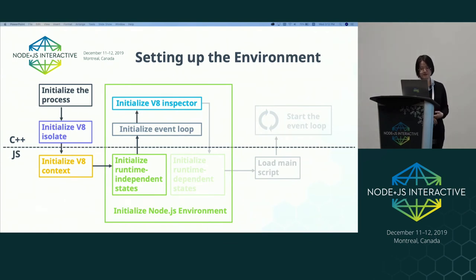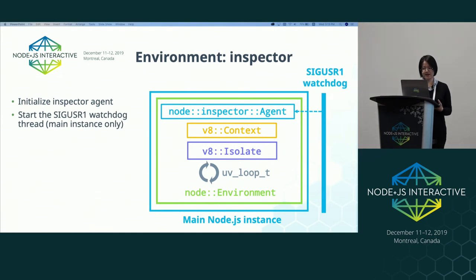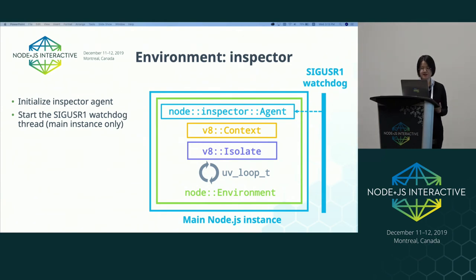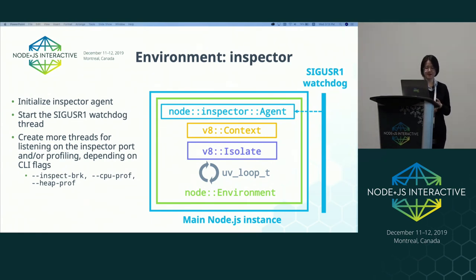After the event loop is fully initialized, we then initialize the V8 inspector, which is used for JavaScript debugging. This includes initializing the inspector agent, which is done even when the inspector is not active. We also spawn a SIGUSR1 watchdog thread that wakes up and asks the main thread to start listening on the inspector port when the user sends SIGUSR1 to the process. This is only done for the main Node instances and not for workers. If the user passes --inspect-brk, --cpu-prof, or --heap-prof when launching the instance, we'll also immediately create more threads for either listening on the inspect port or for profiling.